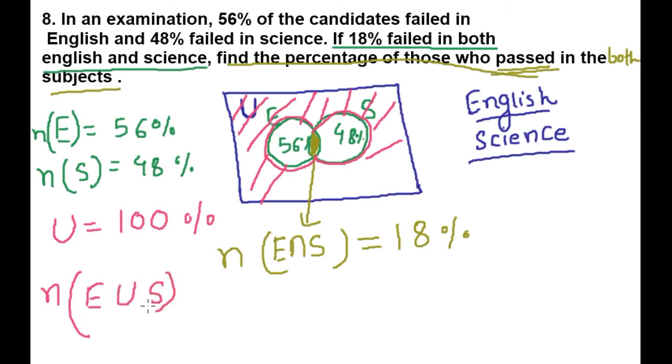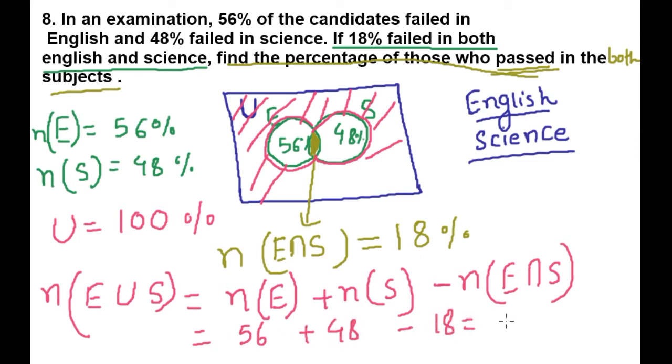To the next step, we will find out n(E union S). Now this is 56 plus 48 minus 18 is equal to, first we will do this addition, 4 and 10 minus 18. Now this is 6 and 8, 86.